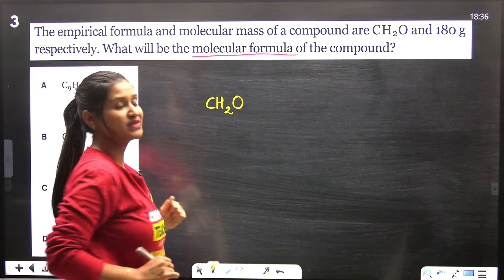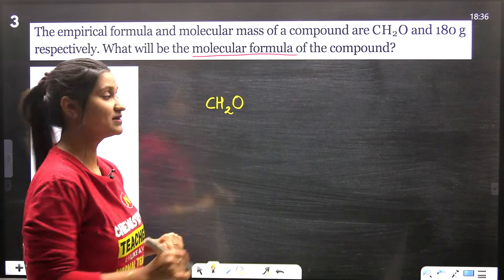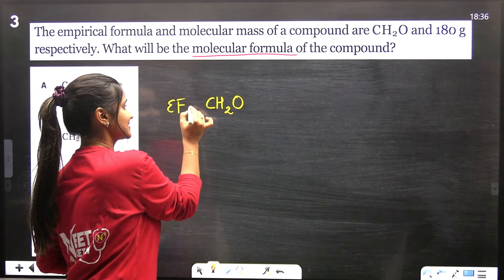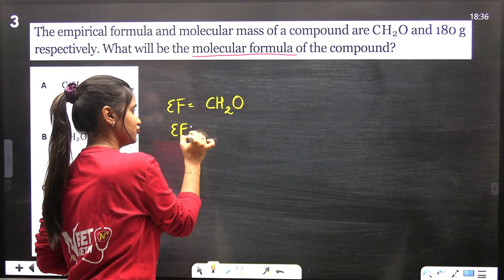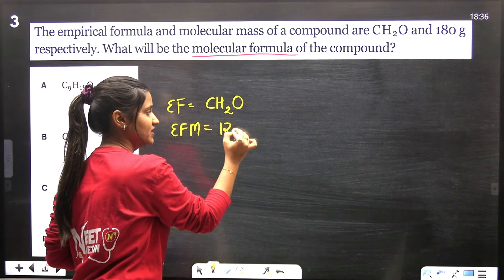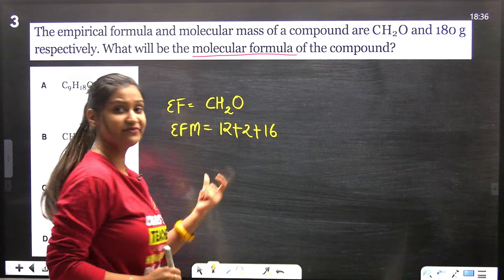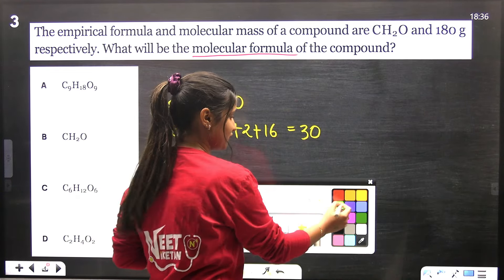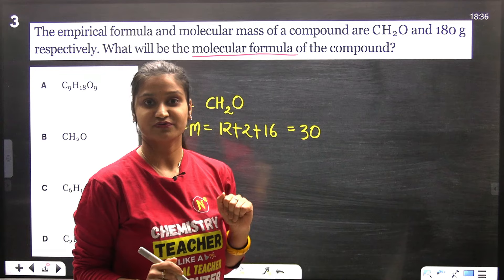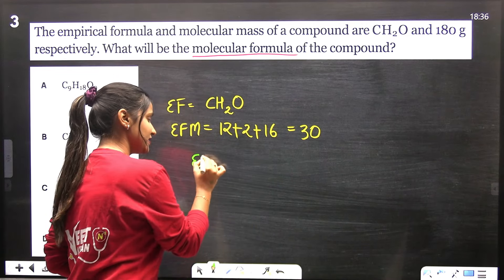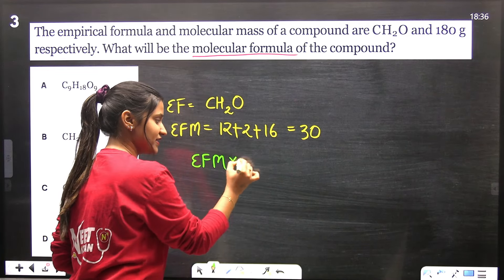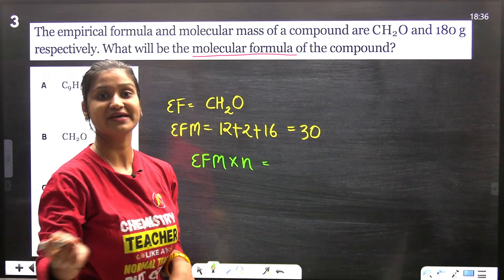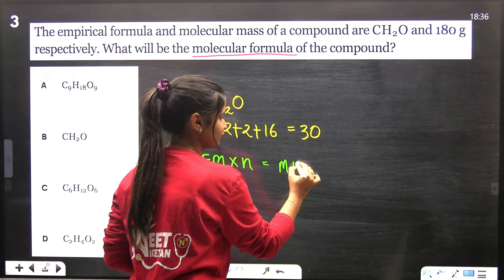How much will it be? 12 plus 2 plus 16, which comes out to be 30. Another thing that we know is that if we multiply the empirical formula mass by N factor, we get the molecular formula mass. We have everything except N.